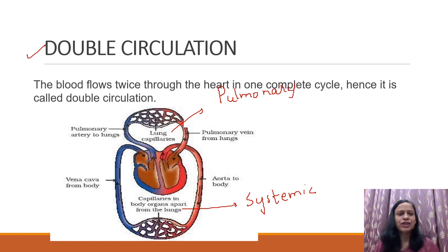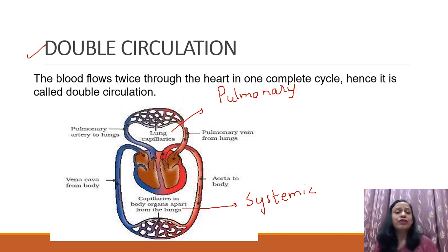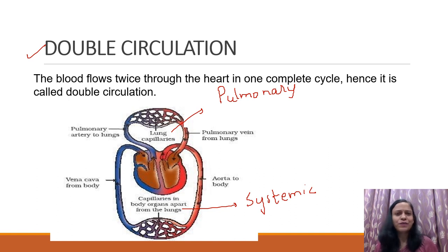So how do we define double circulation? The blood flows twice through the heart in one complete cycle, and that is why we call it double circulation. I hope the concept is clear to everyone. Thanks for joining me.